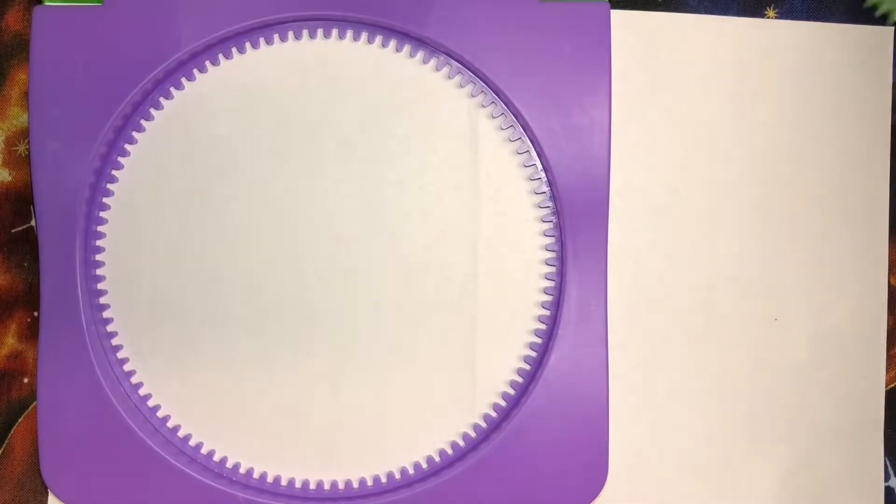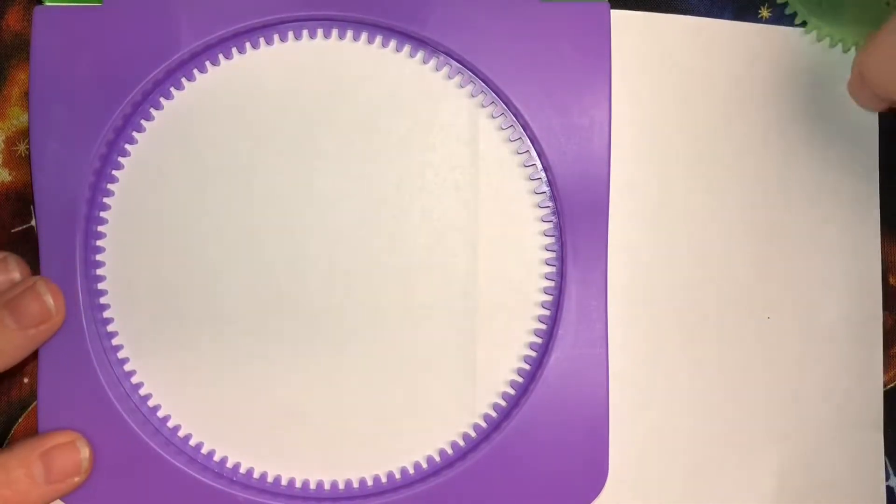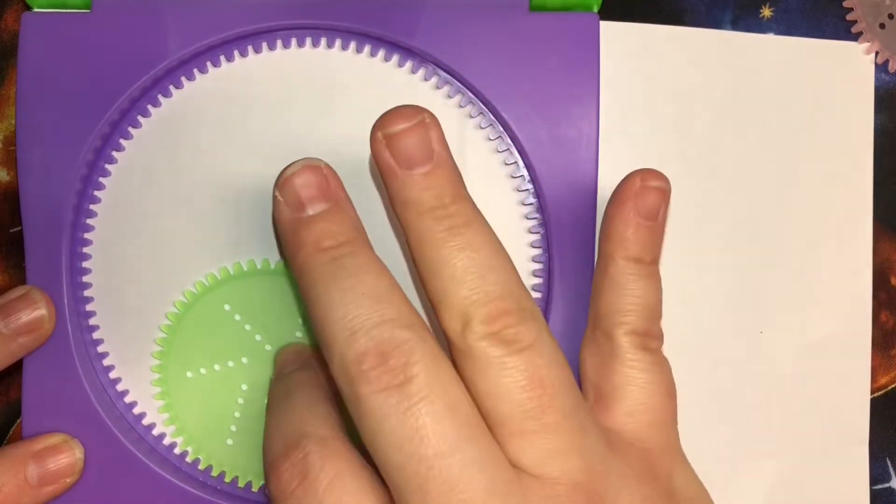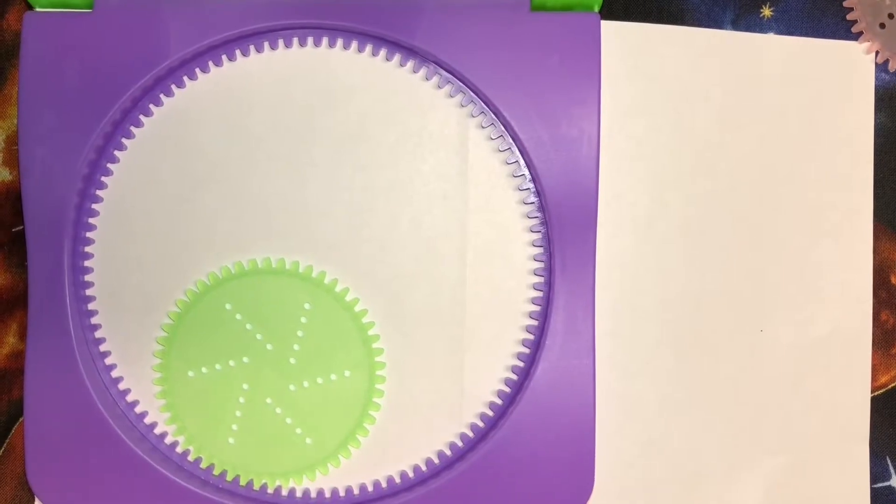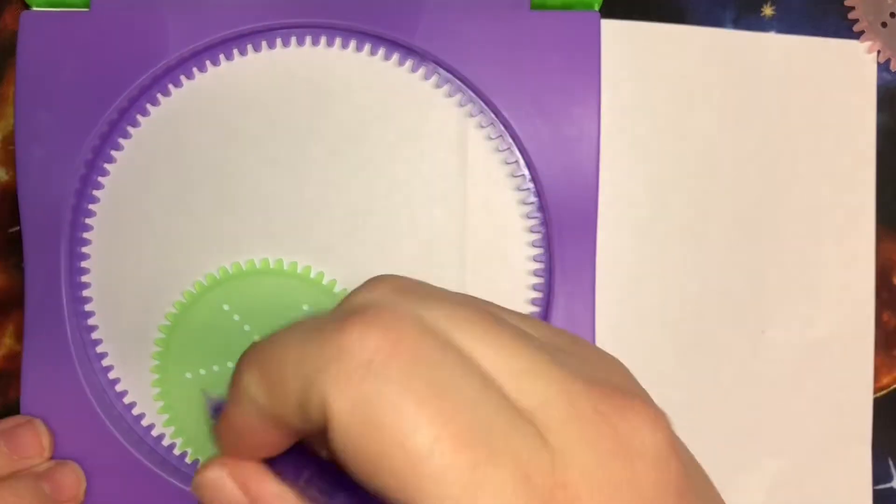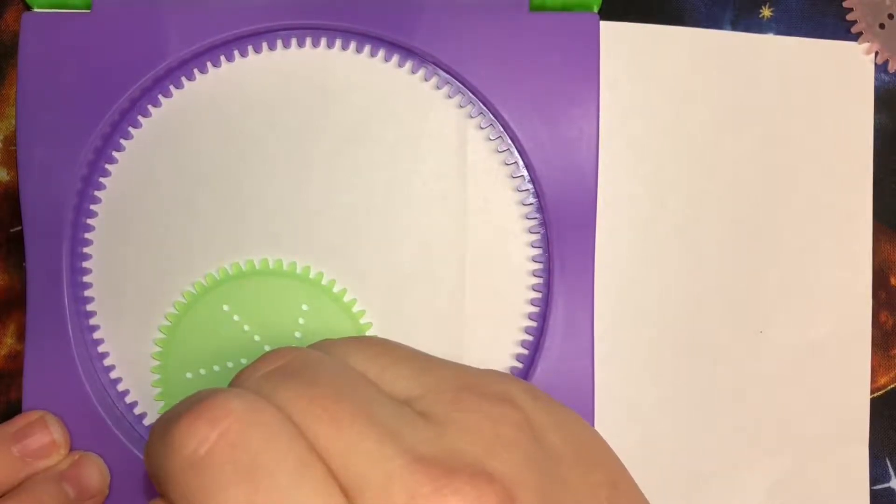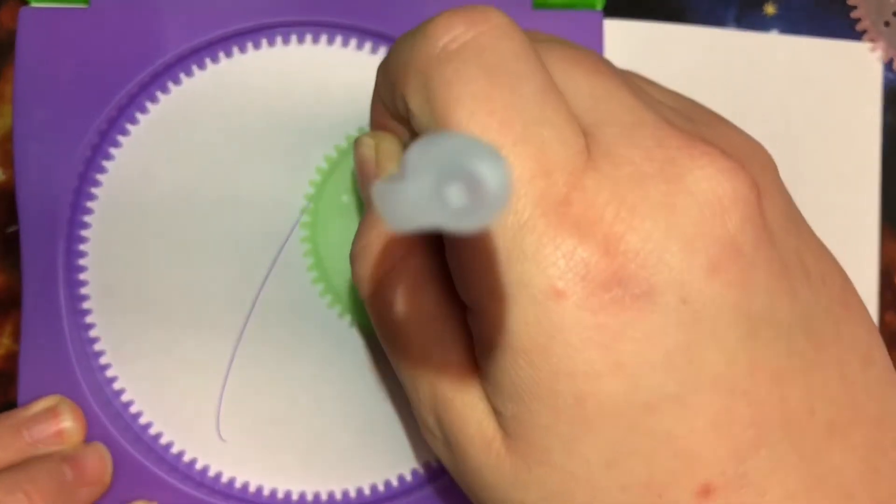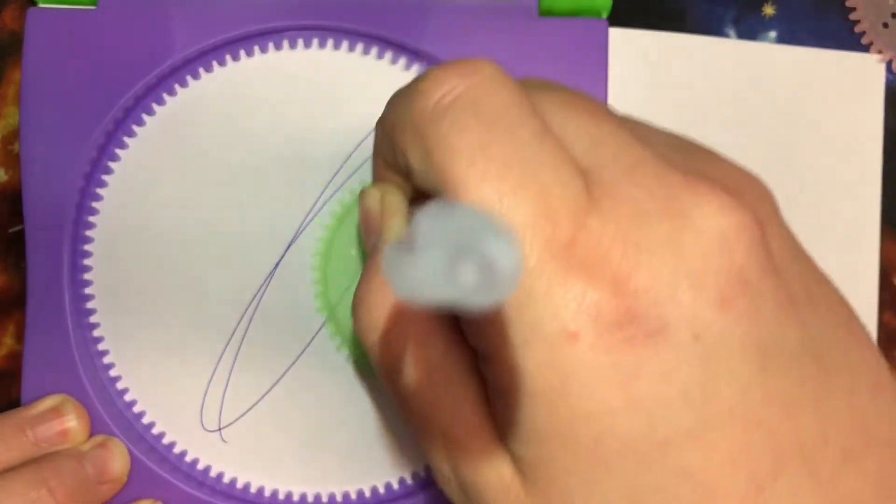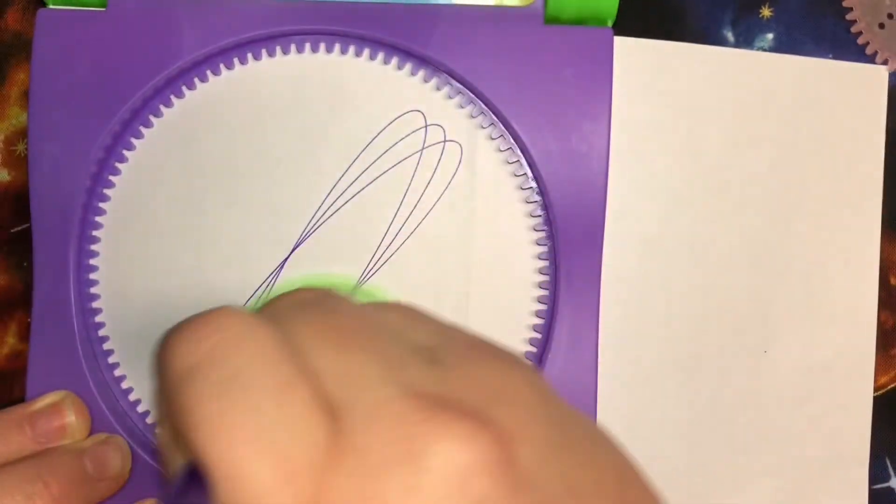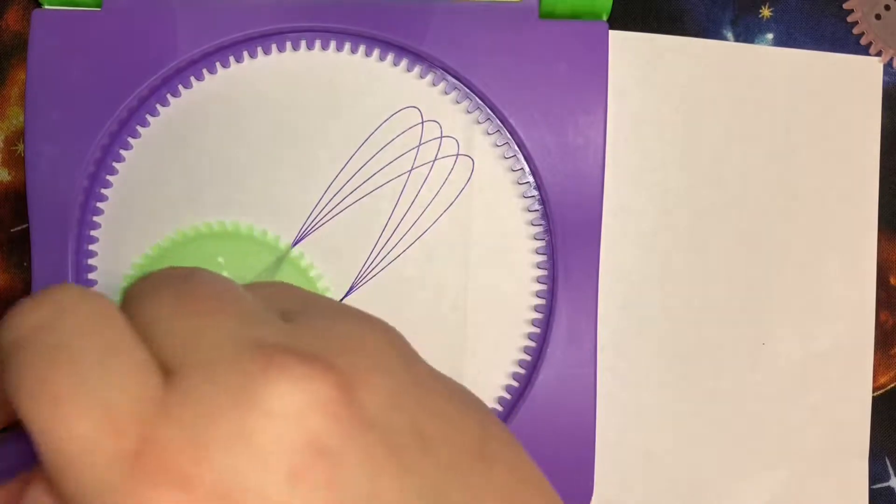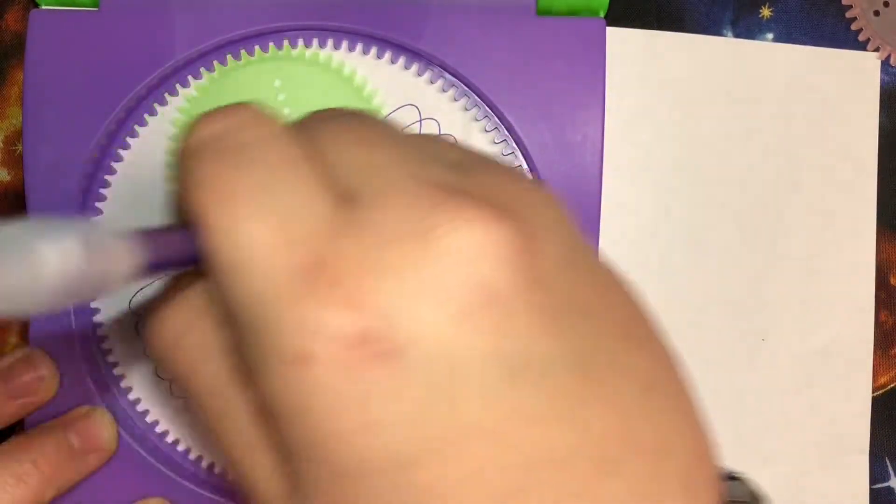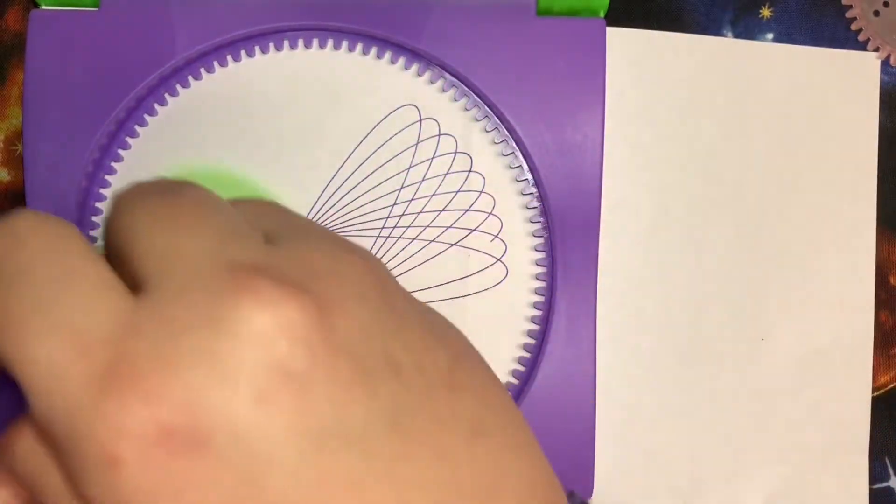We're going to start with the big one, and what you do is you put it in these grooves here. Let's use purple to start with, a nice vibrant purple. You stick it in one of the circles here, and you press in towards the grooves, and it will guide your pen into making ovals.